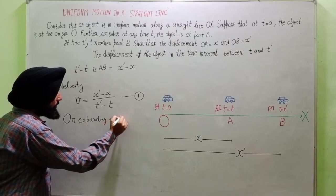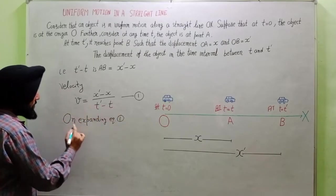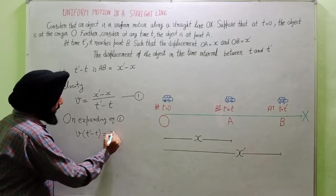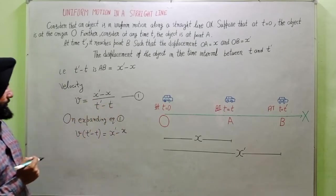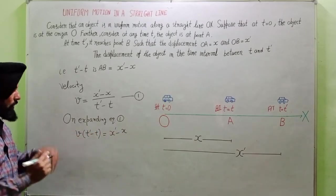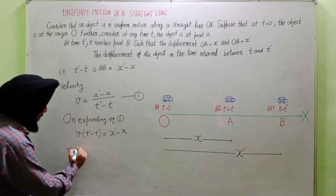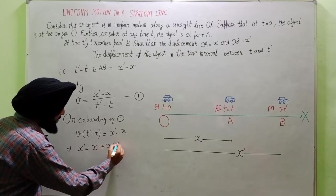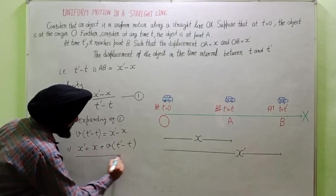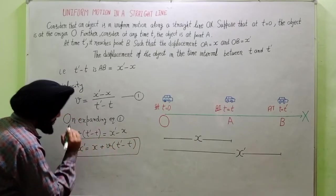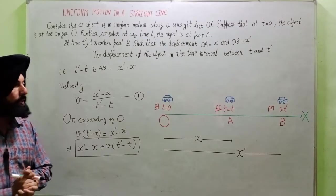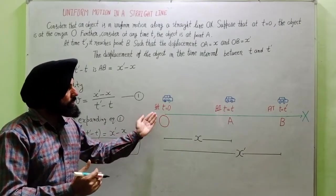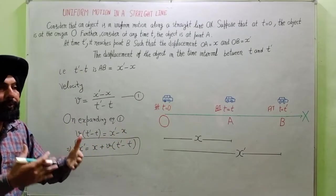On expanding equation 1 by cross multiplication: v times (t-dash minus t) equals x-dash minus x. Rearranging, we get x-dash equal to x plus v times (t-dash minus t). This is the expression for displacement. This is the first case we have considered.